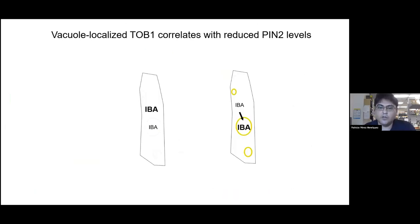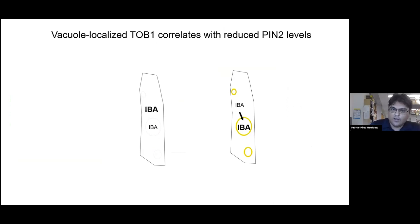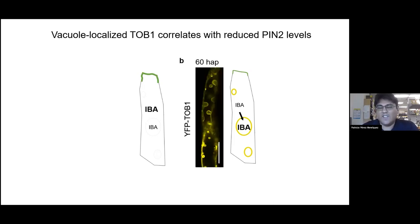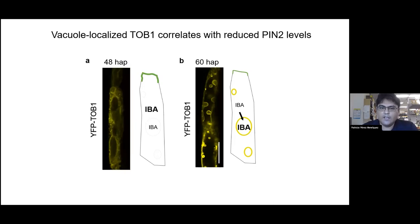We then wanted to know what the terminating signal is. At a conference, one of our collaborators showed us the specific expression of a transporter of IBA localized at the tonoplast — the membrane of the plant's vacuoles (lysosomes). We thought maybe IBA is being sequestered into these vacuoles, which would decrease PIN2 levels. This is consistent with the localization: when PIN2 is decreasing it is at the tonoplast, whereas at its peak it shows reticular expression.